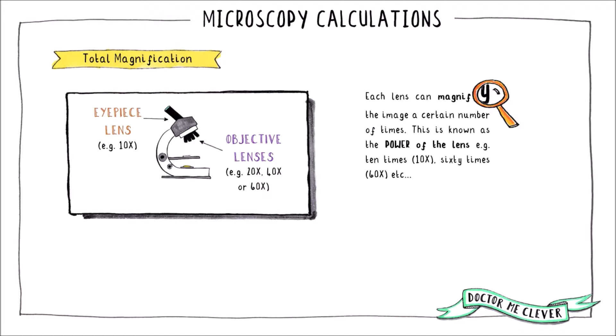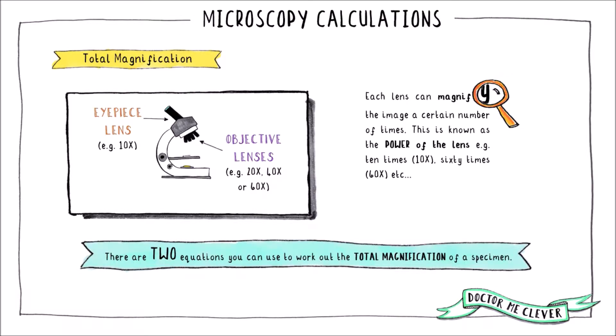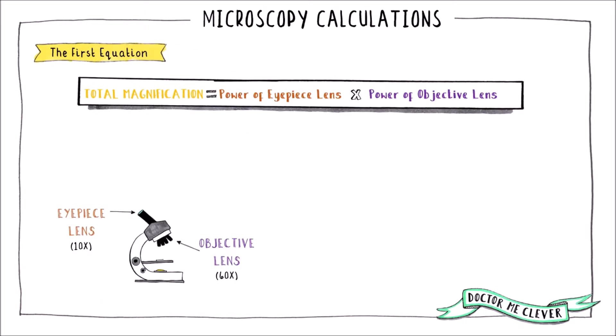The combined magnification of the lenses is the total magnification and there are two ways that you can calculate this. The first equation requires the magnifying power of both the eyepiece and objective lenses. When these two values are multiplied together you get the total magnification.